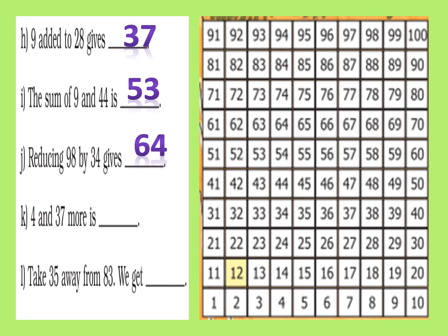For 4 and 37 more — 'more' means to add — we get the number 41. For taking 35 away from 83, look at 83. We subtract, so we jump down 3 rows to reach 53, then step 5 towards the left because we subtract 35, and we reach 48.